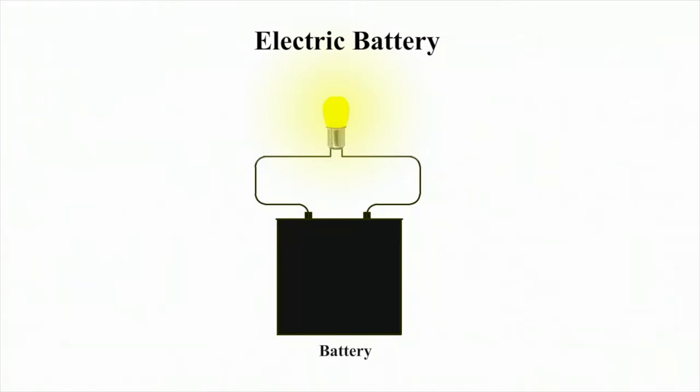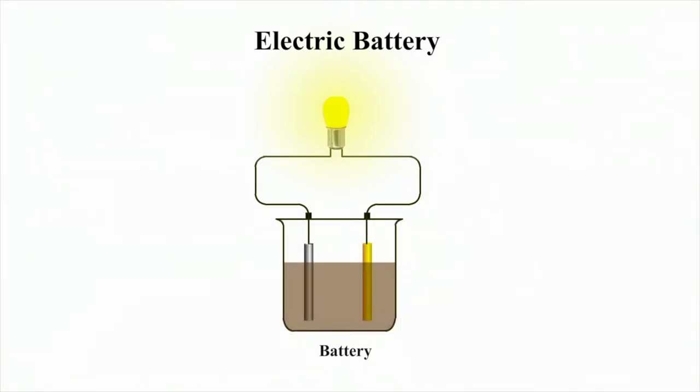There are many types of battery. Some batteries have two metal electrodes that are separated by an electrolyte, which is usually an acid. The electrodes may be copper and zinc or two other metals.